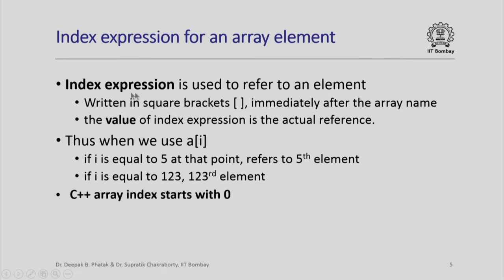We further look at the notion of index expression which is used to refer to an element written in square brackets immediately after the array name. The value of index expression is actually the reference to the element. For example, when we use a[i], if i is equal to 5 at that point a[i] refers to fifth element. However, notice that the index in C++ always starts with 0. The very first element in the array is actually 0th element, then first element, second element, etcetera.